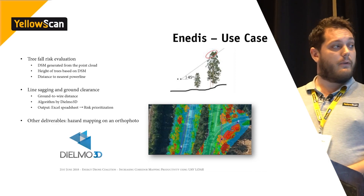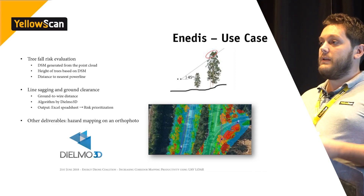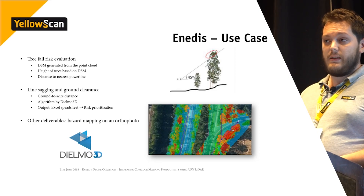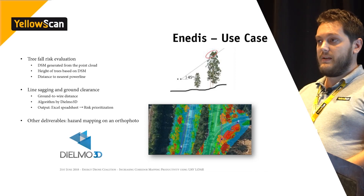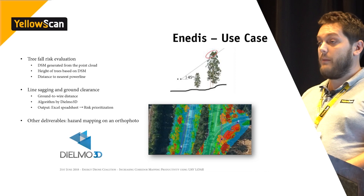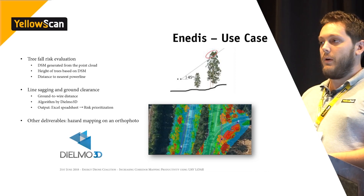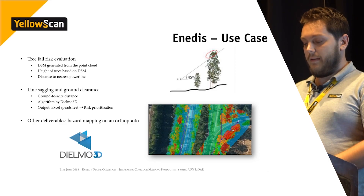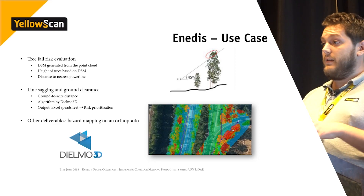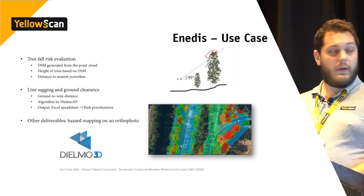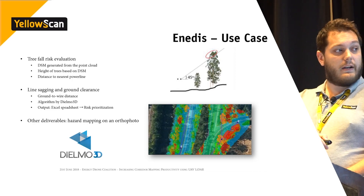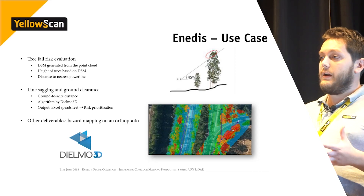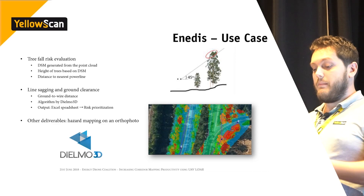The third type of result is for line sagging. Using the same input data, you can calculate the ground-to-wire distance. That algorithm is owned by DLMO, and the output is an Excel spreadsheet identifying spans where a line is too low. All hazards are then gathered and draped on an orthophoto — red zones indicate danger — providing all results to Enidus.